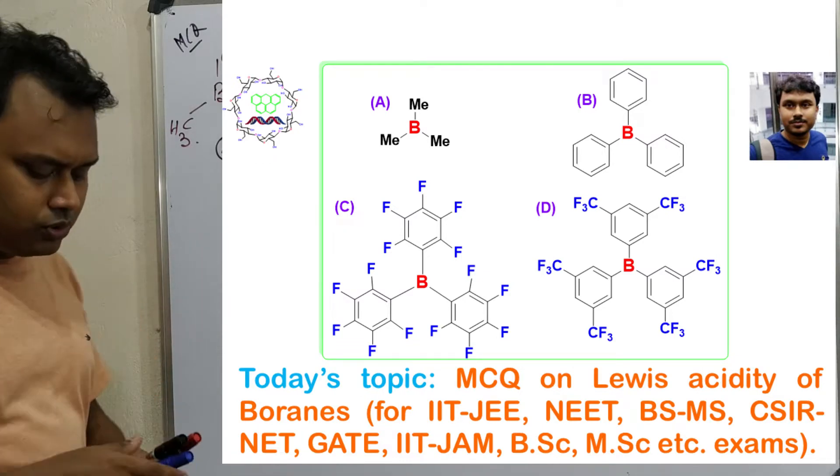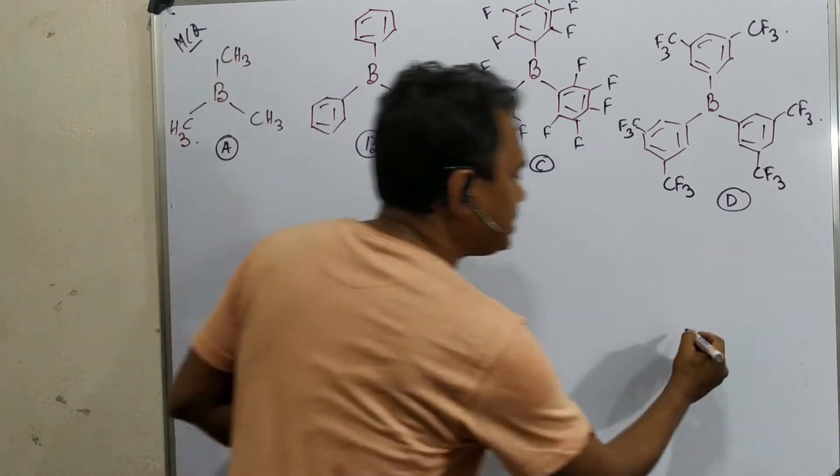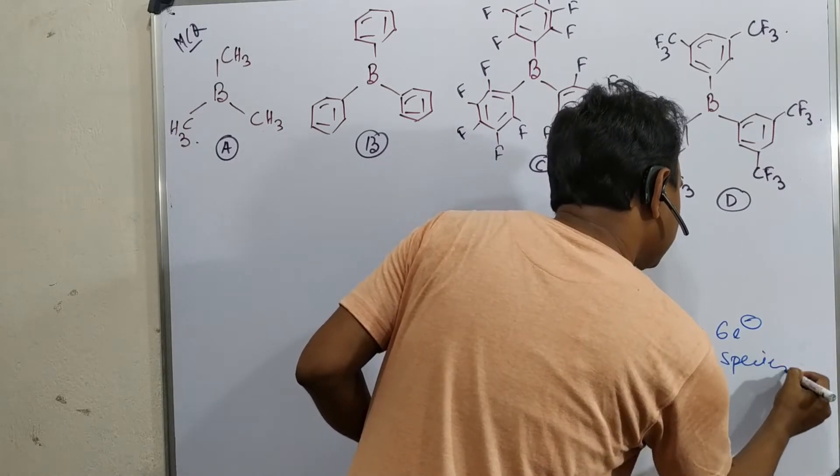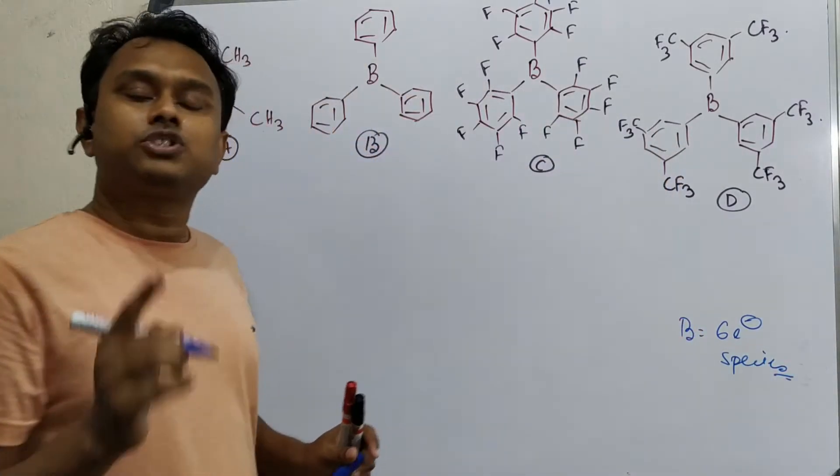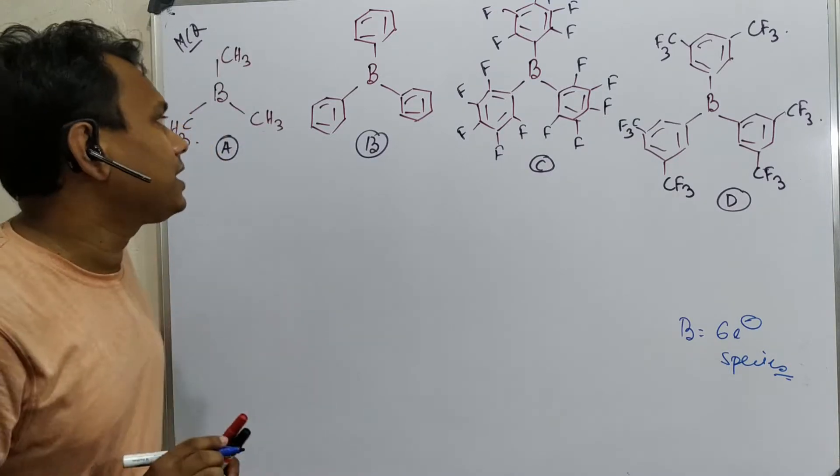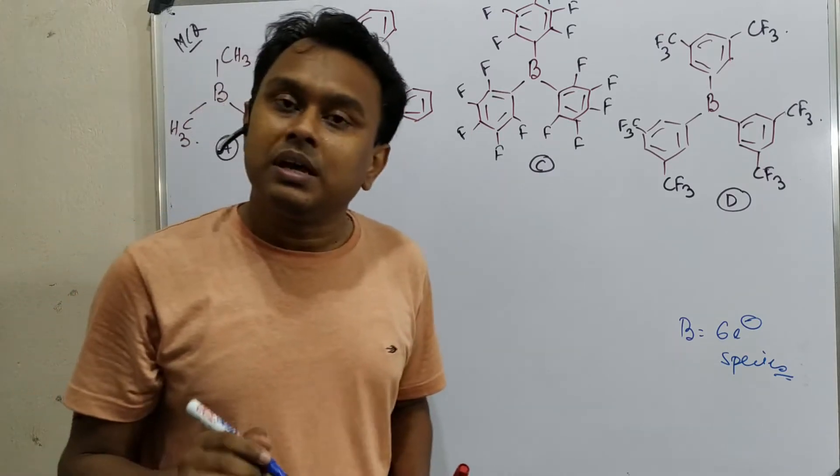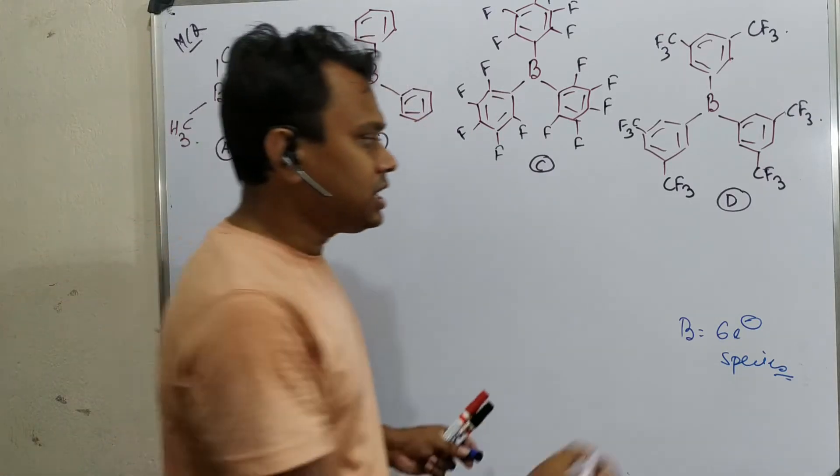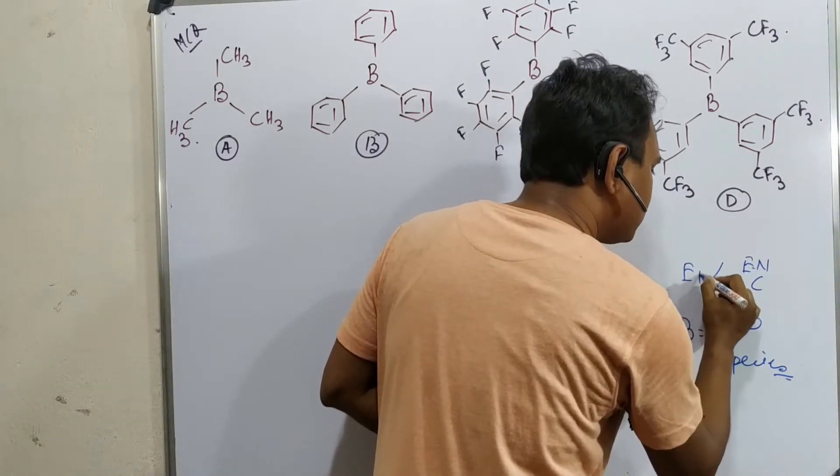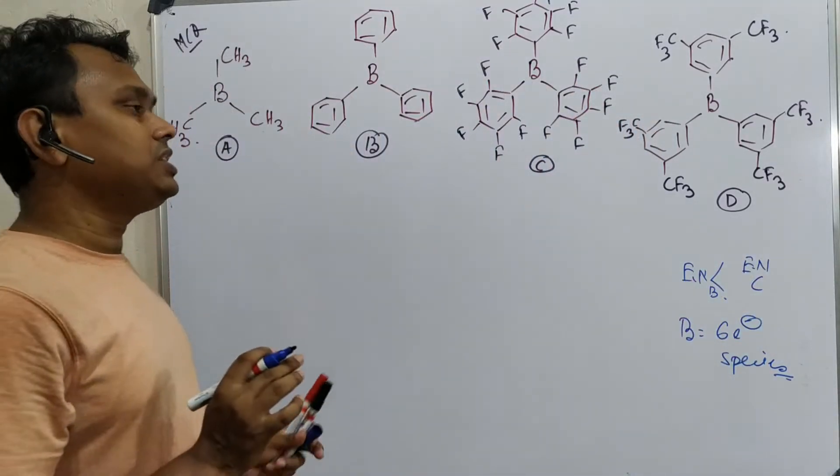Before going to details, what is asked? Boron Lewis acidity. If you look at boron, this boron is actually a six-electron species. That is why it needs two electrons to fulfill its octet. That is why it acts as a Lewis acid. Now the question is, look at where boron is attached. In every case boron is attached with carbon. If you look at the electronegativity, carbon is more electronegative than boron because in the periodic table boron is on the left side.